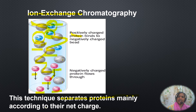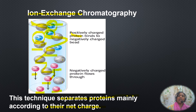The resin can be either a cation exchanger or an anion exchanger. The next question is: how do you elute the protein that has bound to the resin? To elute the bound protein, we can vary the ionic strength or change the pH of the buffer, so that the interaction between the protein and the resin becomes poor and the protein is eluted out.